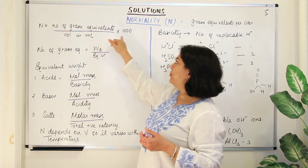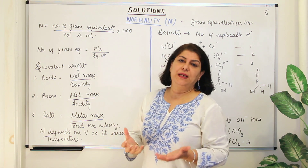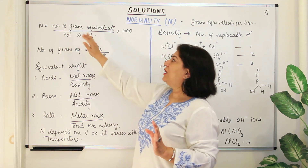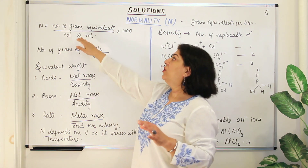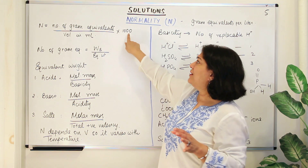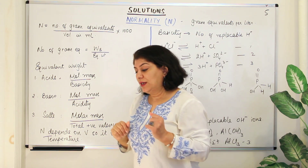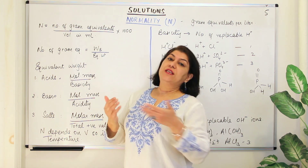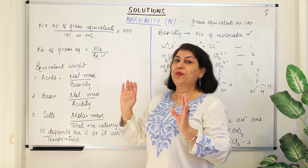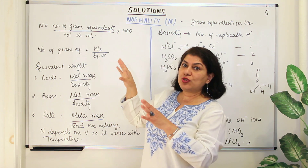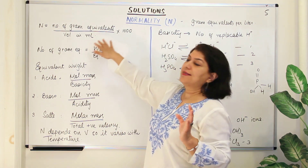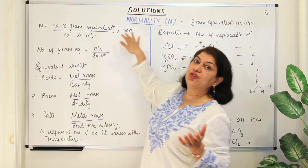That formula is unnecessarily complicated because of the milliliters. If you simplify it, normality equals the number of gram equivalents divided by the volume of the solution in liters, and you can ignore the thousand. Compare this to molarity, which is the number of moles of solute divided by the volume of the solution in liters. So the only difference is that normality uses gram equivalents instead of moles.